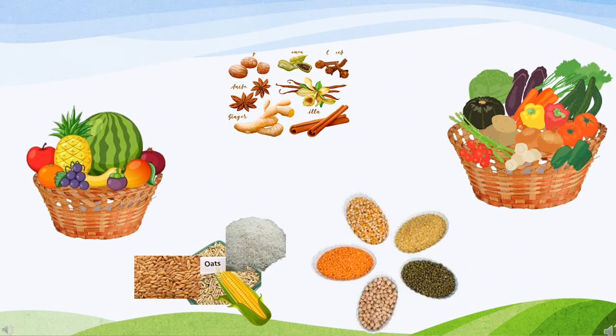We get fruits, vegetables, pulses and cereals from plants. Children, even we get spices also from plants, which makes our food tastier. Children, we eat different parts of plants — for example, we eat seeds, fruits, flowers, stems and leaves of plants. We even eat roots of plants.